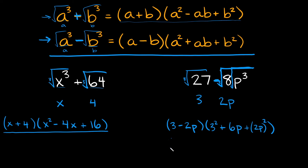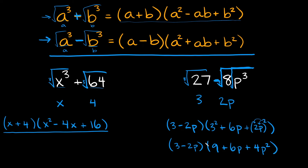Now we can simplify this a little bit. Bringing it down, we have 3 minus 2p, and then 3 squared is equal to 9, so we put 9 plus 6p plus — and then 2p squared. Remember, whenever you have an exponent you apply it to everything inside the parentheses, so you apply it to the 2 and to the p: 2 squared is 4, and p squared is p squared. So this would be your final answer.